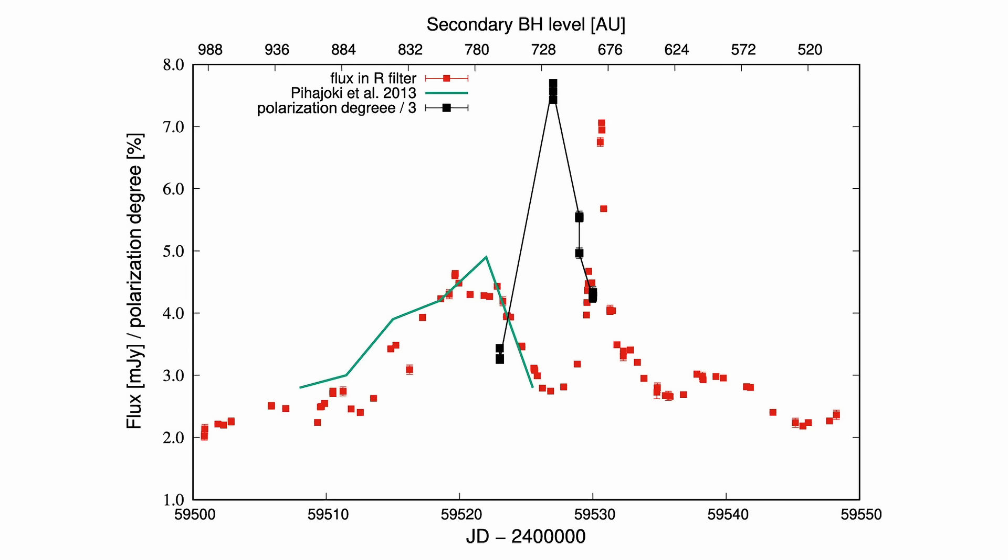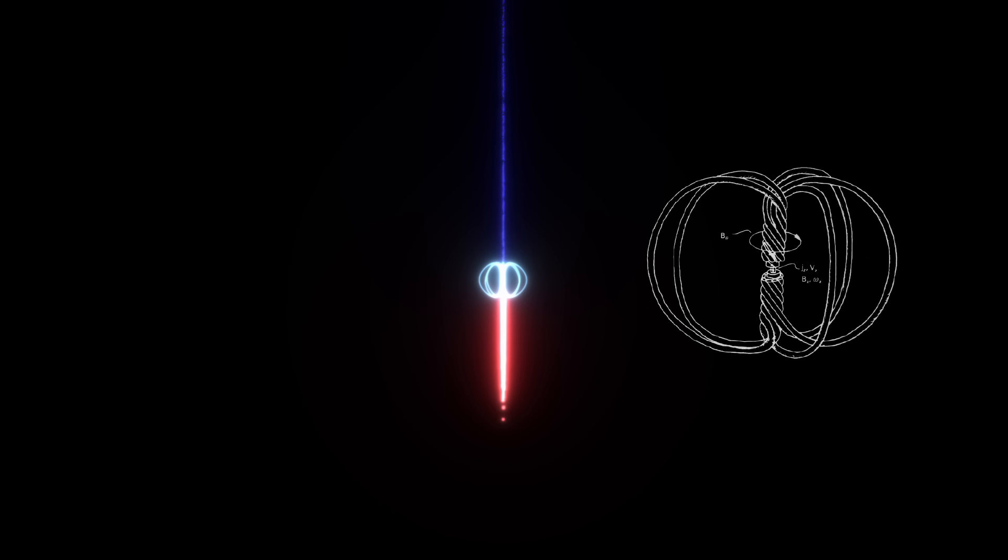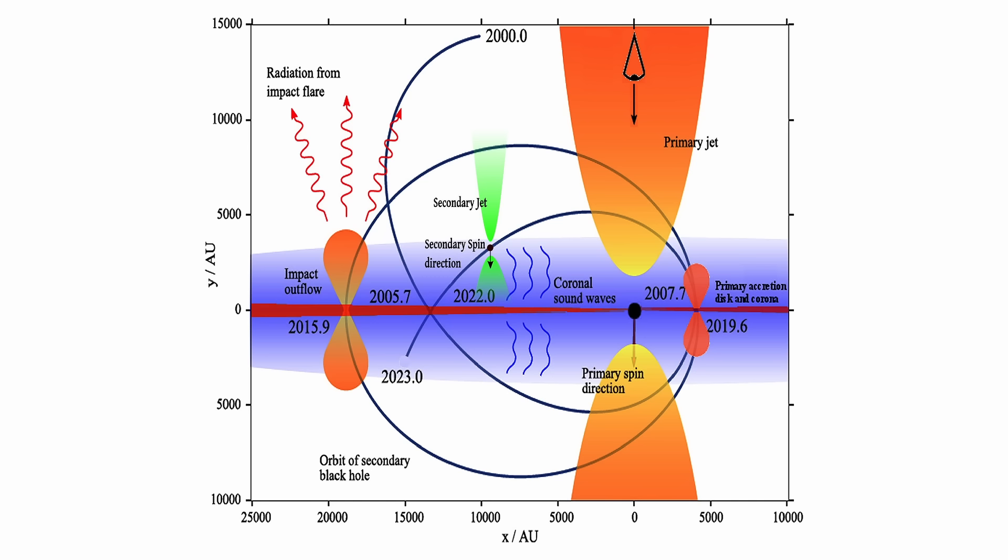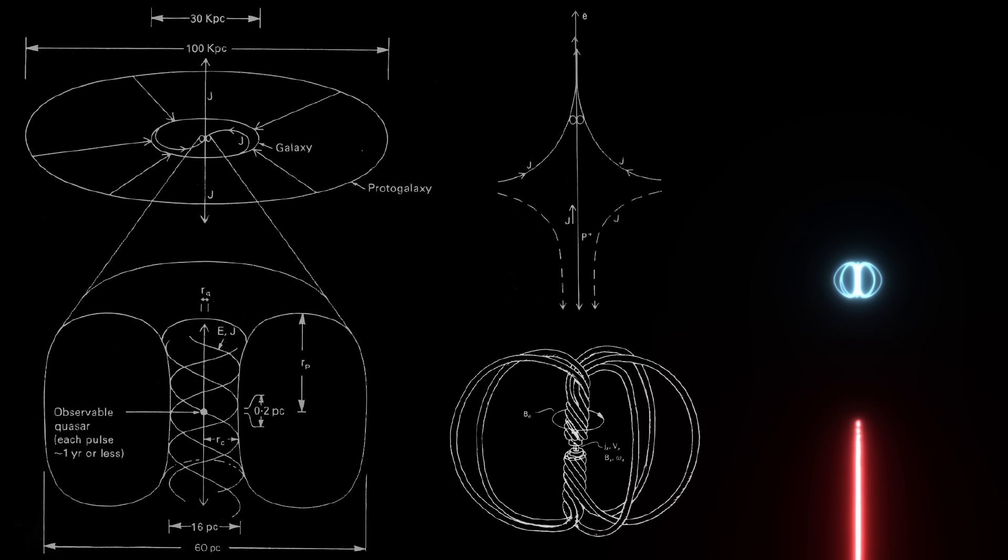Changes in the spectral index and polarization can also be accounted for by the magnetic reconnection process. As the plasmoid forms and evolves, they can emit across different frequencies, and the magnetic field structure can affect polarization. When considering the source size constraints in the paper, they use this to suggest that the new radiation must be coming from the jet of the secondary black hole. Eric Lerner's plasmoid model offers an alternative explanation for the observed flare in OJ287, without requiring a secondary black hole.